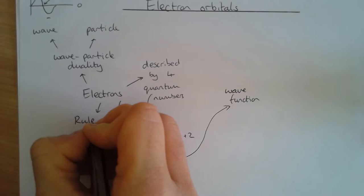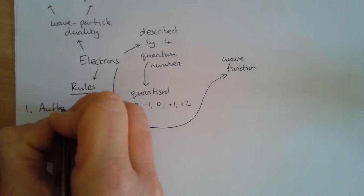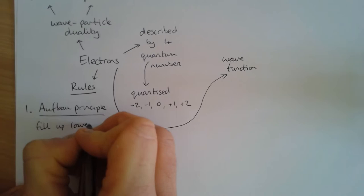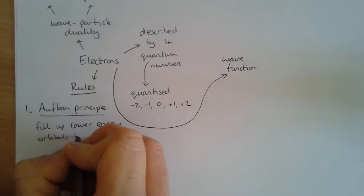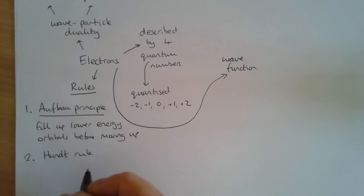There are some rules we will have come across before about how we fill up electron orbitals, but we need to give them proper names. Number one is what's called the Aufbau principle. The Aufbau principle states that we fill up lower energy orbitals before moving up to higher energy orbitals.